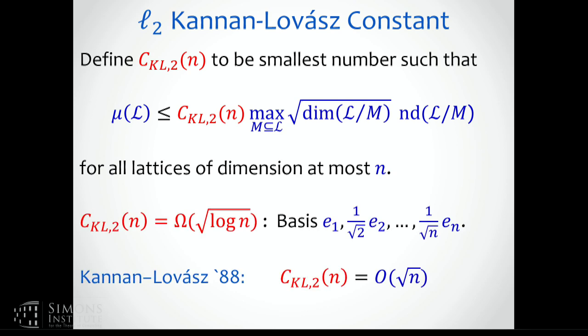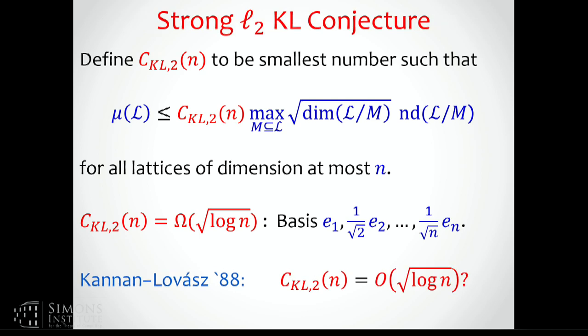Some easy lower bounds on this quantity come from a very simple lattice — just the appropriate scaling of Z^n. You can convince yourself that this quantity has to be at least square root of log n. This is in the spirit of many of these conjectures — such as this one and reverse Minkowski — where the belief is that the interesting lattices or hard cases are the stupid ones. In essence, you can conjecture that the integer lattice is the worst example.